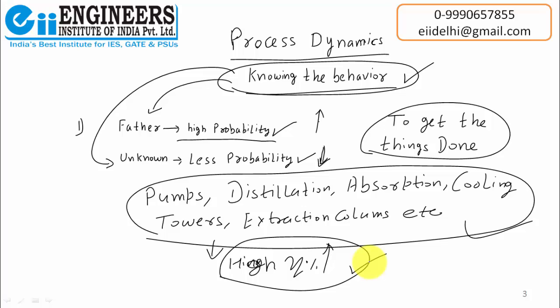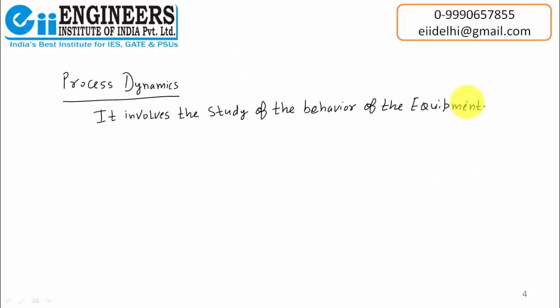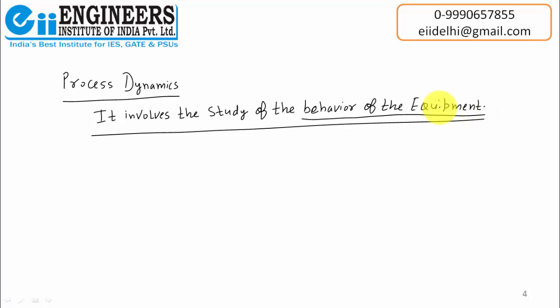So process dynamics is the study of the behavior of the equipment. If we know the behavior of the equipment, it is very easy to get things done. That is the very simple definition of process dynamics — and you can implement this in your daily life too. For example, in school or college, if you want to propose to a girl without knowing her behavior, her name, or anything about her and you go ahead, there are high chances of rejection. But if you know that girl completely — her likes and dislikes — then the chances of getting a yes increase. That is process dynamics: knowing the behavior.